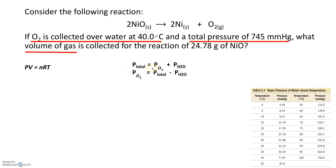That total pressure is the hint — the total pressure is not just the pressure of the oxygen gas, but also the vapor pressure of the water, because you're collecting it over water. This is Dalton's law of partial pressure: the total pressure is a combination of water vapor and oxygen. To get just the pressure of the oxygen, I rearrange Dalton's law and subtract the water vapor pressure from the total pressure.